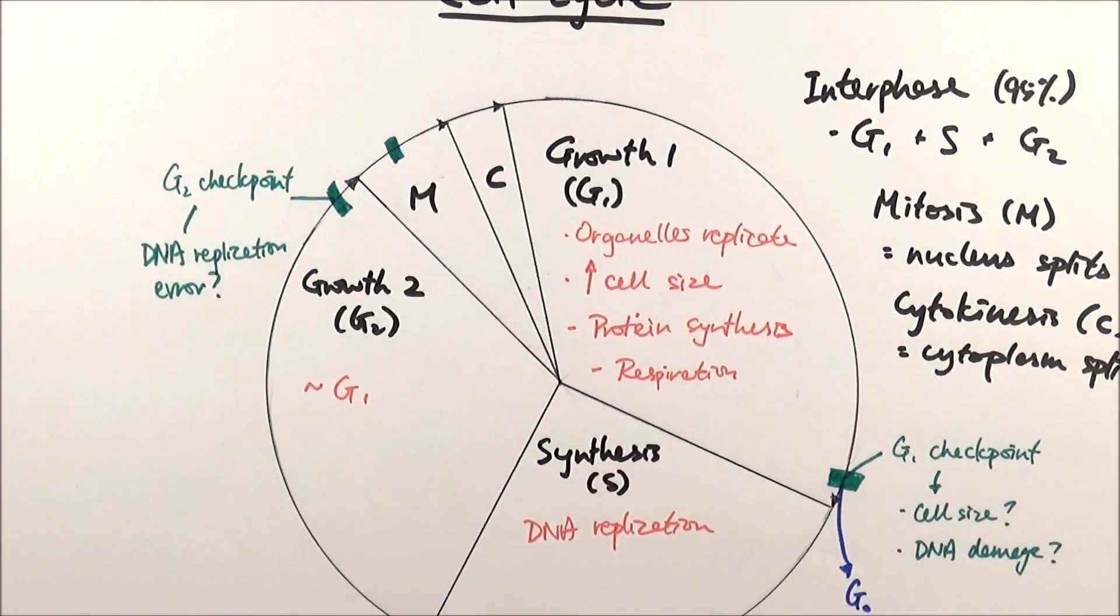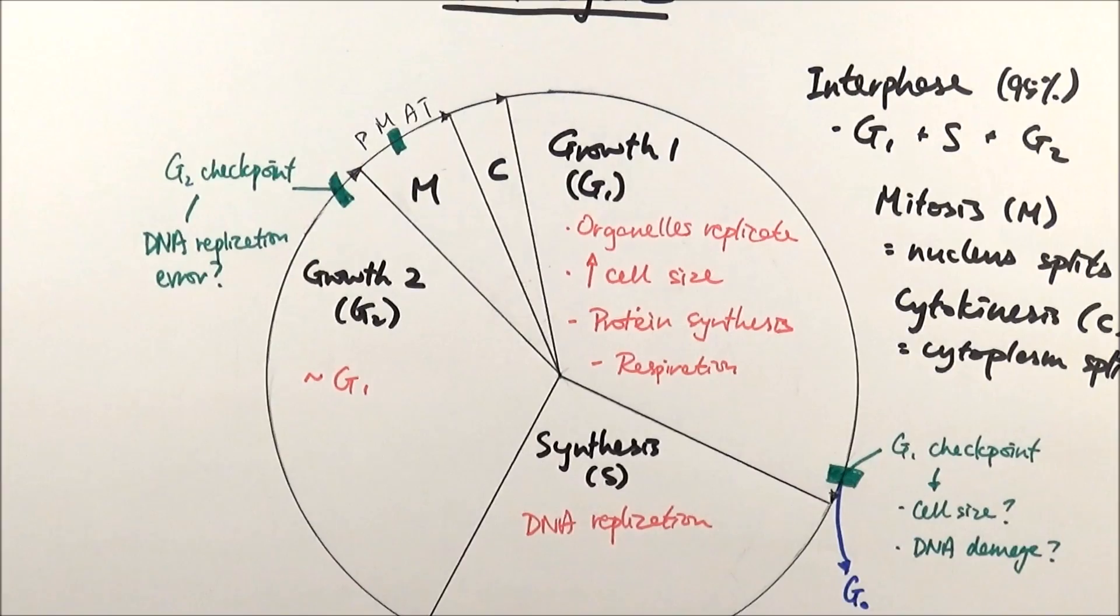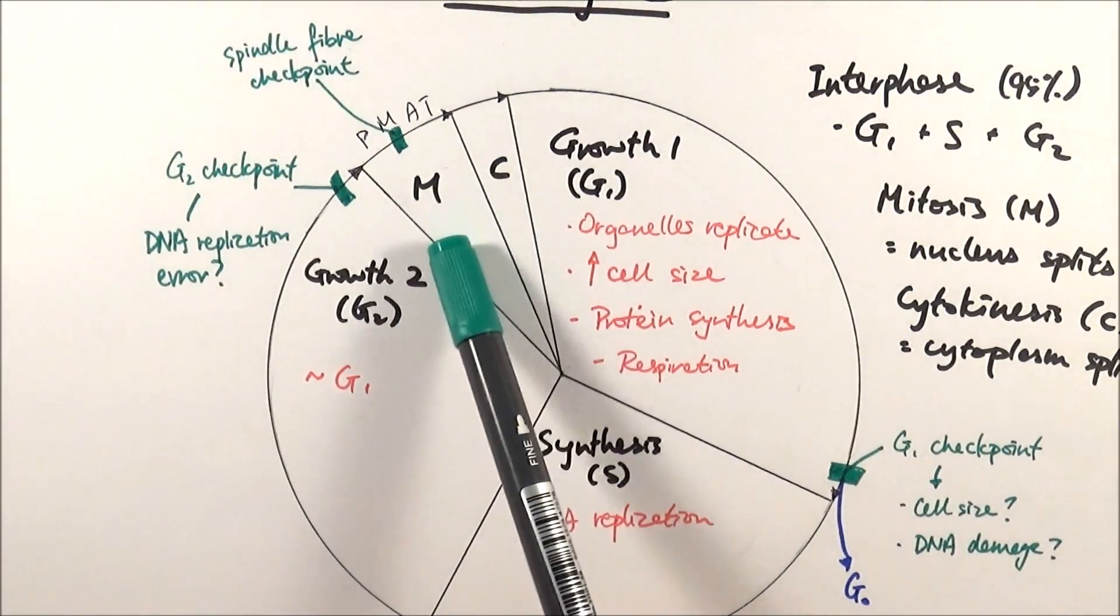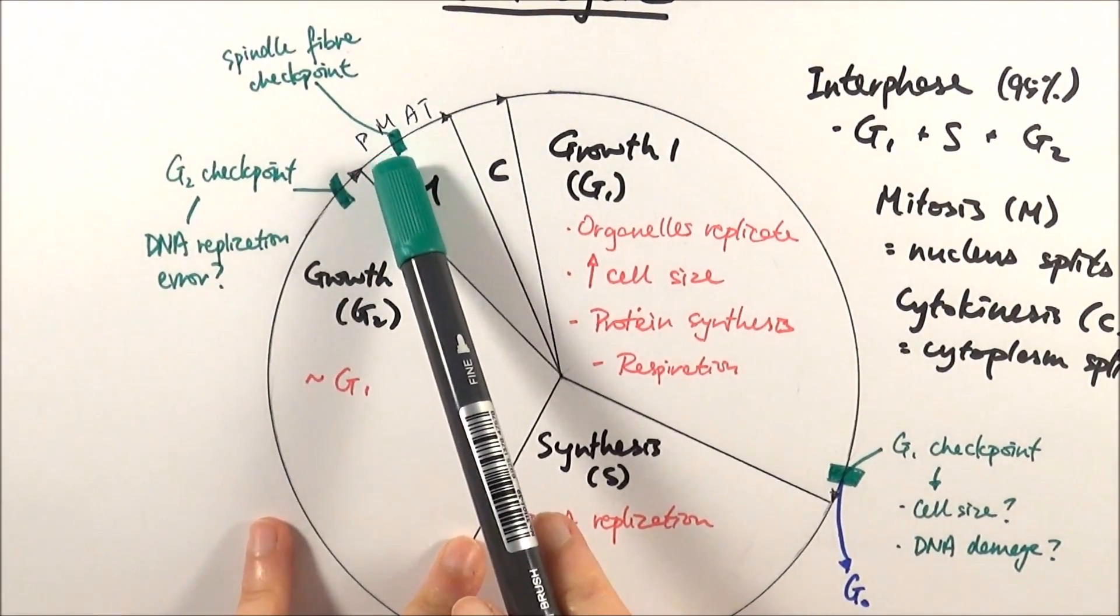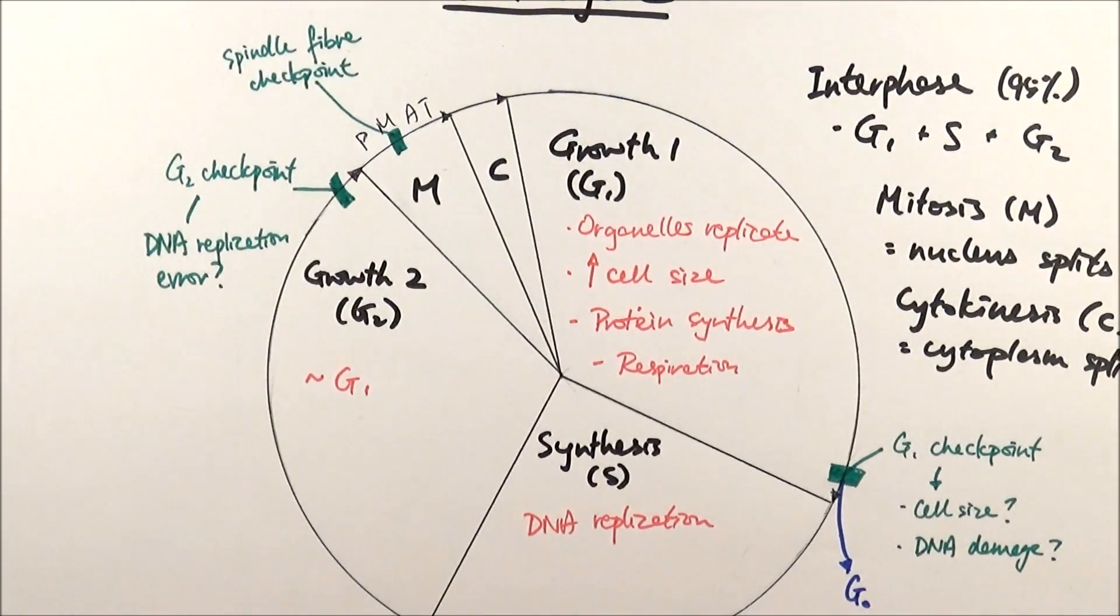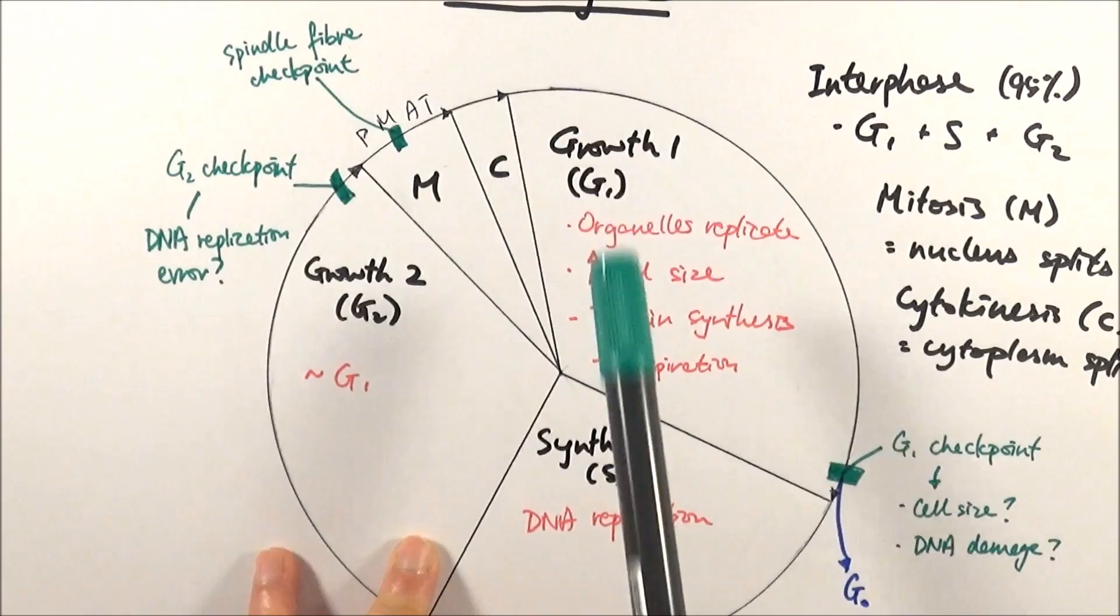Mitosis undergoes four specific phases: prophase, metaphase, anaphase, and telophase, so we call them PMAT. This checkpoint happens specifically in the metaphase. We call it the metaphase checkpoint or the spindle fiber assembly checkpoint. Later when we go into the details of mitosis, it will make a bit more sense. What happens in metaphase is that the DNA lines up along the center of the cell, preparing itself to be split apart into two.